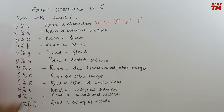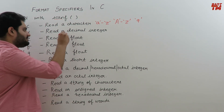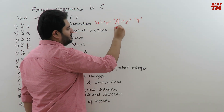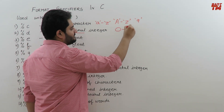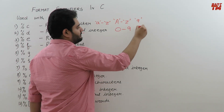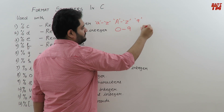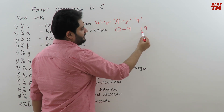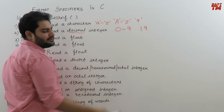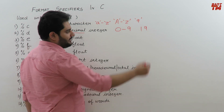%d is used to read a decimal integer. A decimal integer is any integer built using digits between 0 to 9. For example, 19 — both 1 and 9 lie between 0 and 9 — so 19 is a decimal integer.